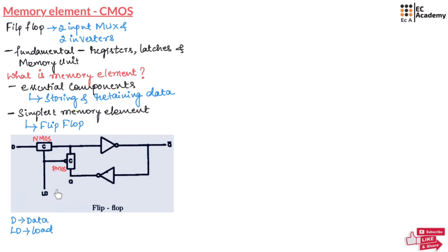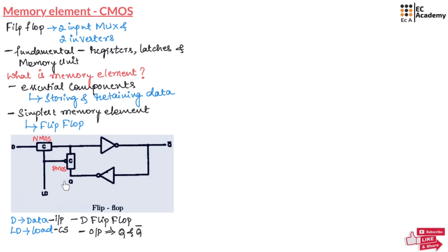This figure shows a simple D flip-flop with one input represented by D, one control signal represented by LD, and two outputs represented by Q and Q-bar. Q is the output and Q-bar is the complement of the output. This circuit operates based on the LD signal to control data storage.